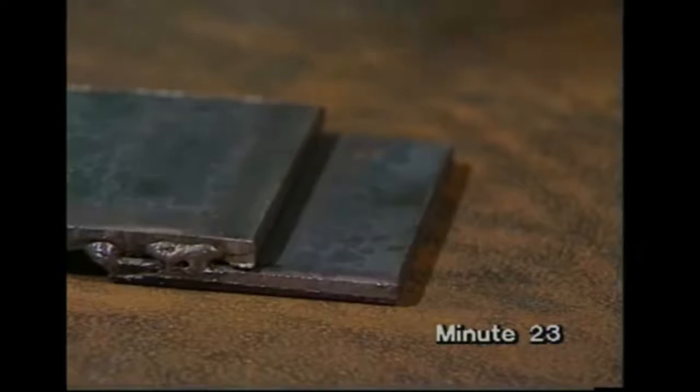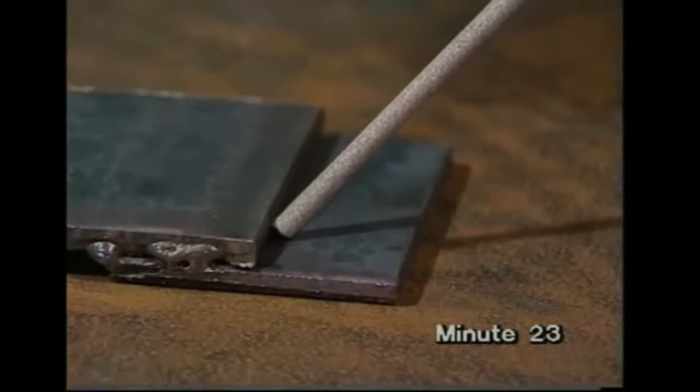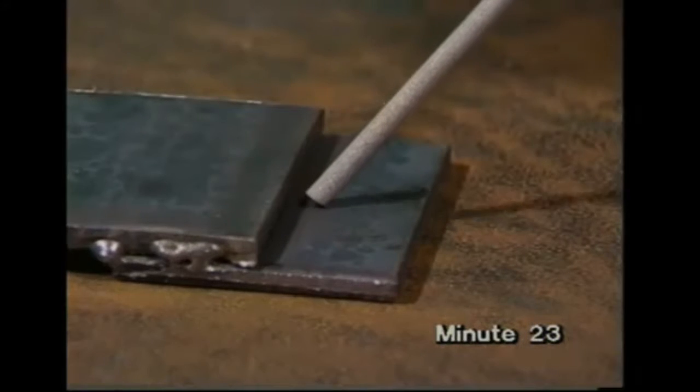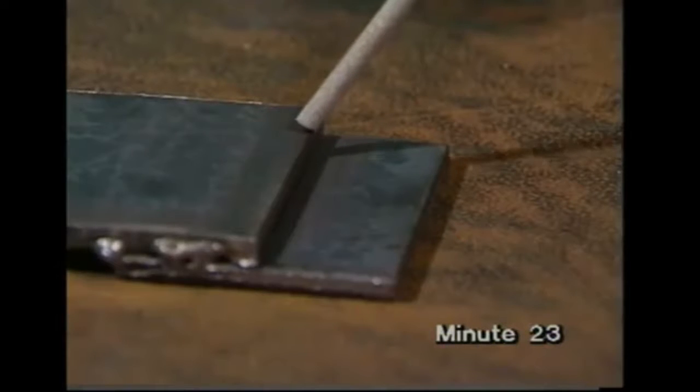If you don't keep the electrode aimed exactly at the corner, but let it wander, the weld metal won't be in the right place, so it won't join the two parts.